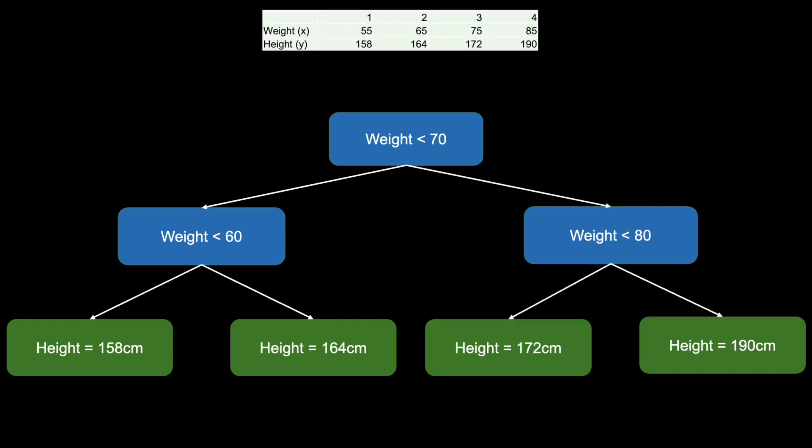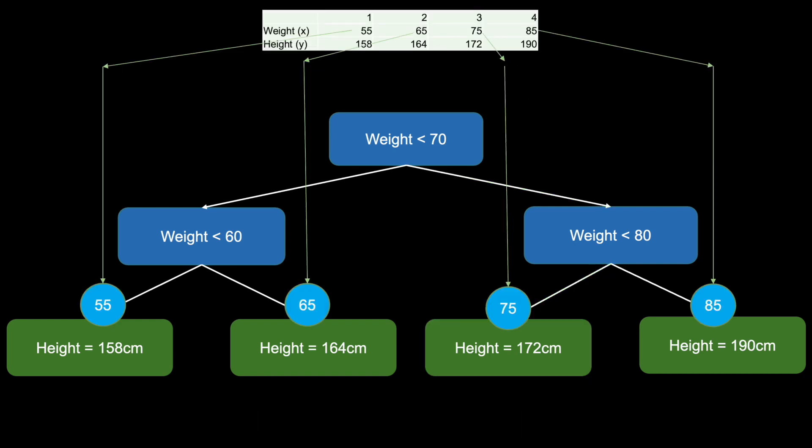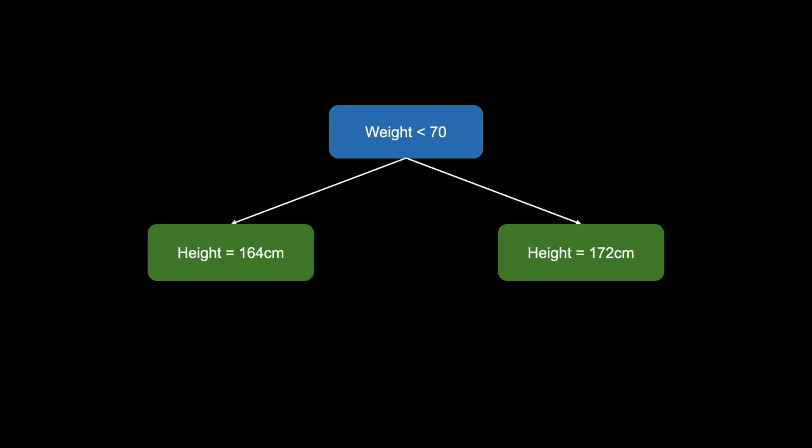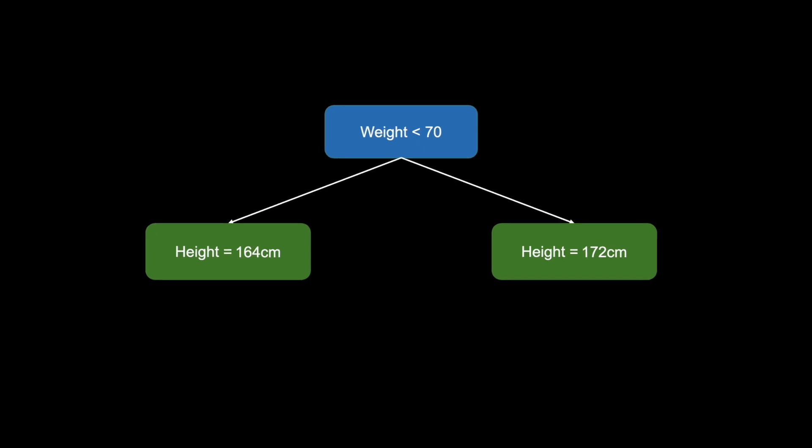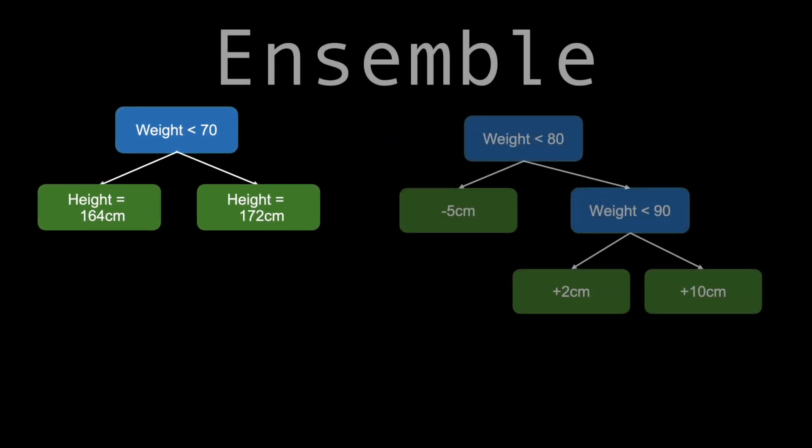Given enough depth, the tree can achieve zero training loss and generalization becomes a major issue. So going shallow and building another tree has been shown to generalize better. Building on the CART model, boosting goes a few steps further and once we reach a specified depth or number of leaves, we build another tree. This is called an ensemble model.